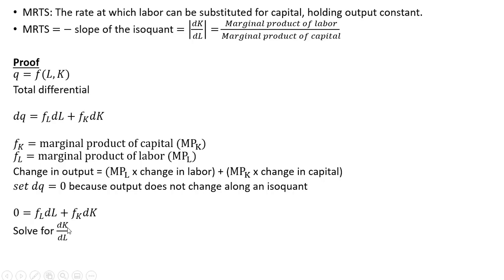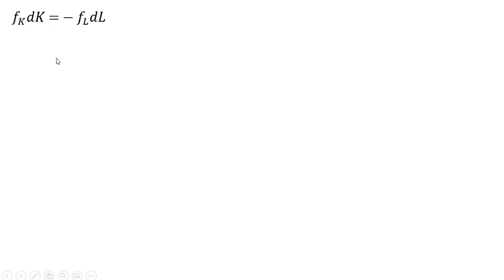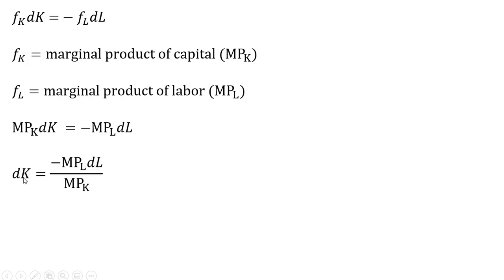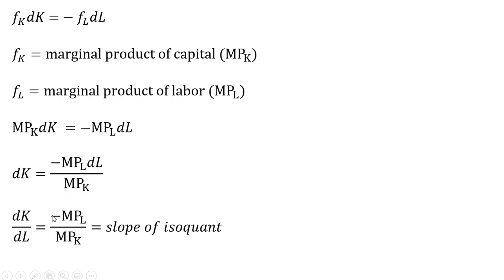Now we want to solve for the slope of the isoquant, which is change in capital over change in labor. Moving some things around and rewriting, we substitute out F subscript k and F subscript l — our partial derivative notation for marginal products of labor and capital — and solve for dk, the change in capital, and then divide through by the change in labor. We have an expression for the slope of the isoquant: minus the marginal product of labor divided by the marginal product of capital.